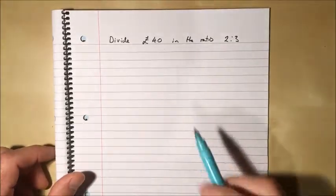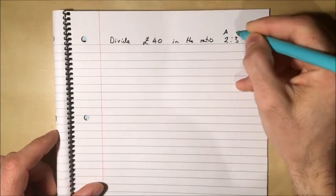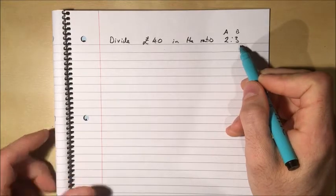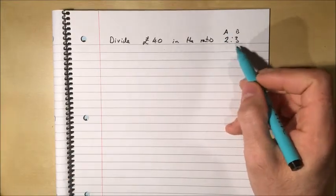So if we're looking at dividing an amount in a ratio, I've got £40 and I'm going to split it up between two people, let's say person A and person B. Person A is going to get £2 every time person B gets £3. So I don't want to split it evenly, I want to give person B more money than person A and I want to do it in this way.